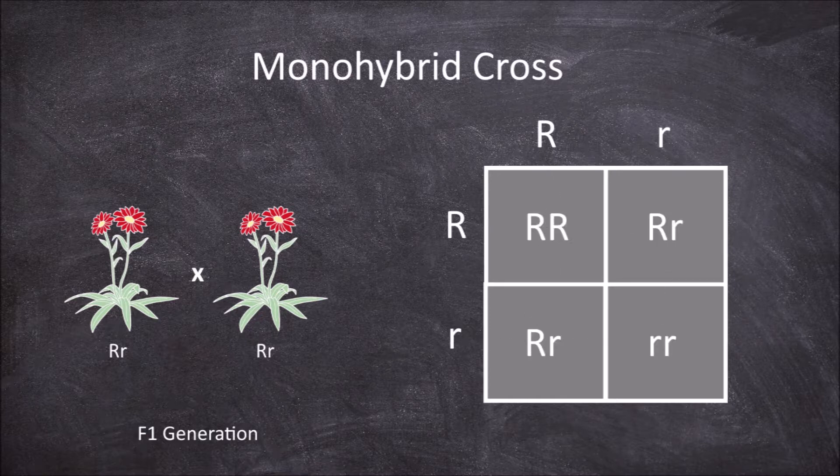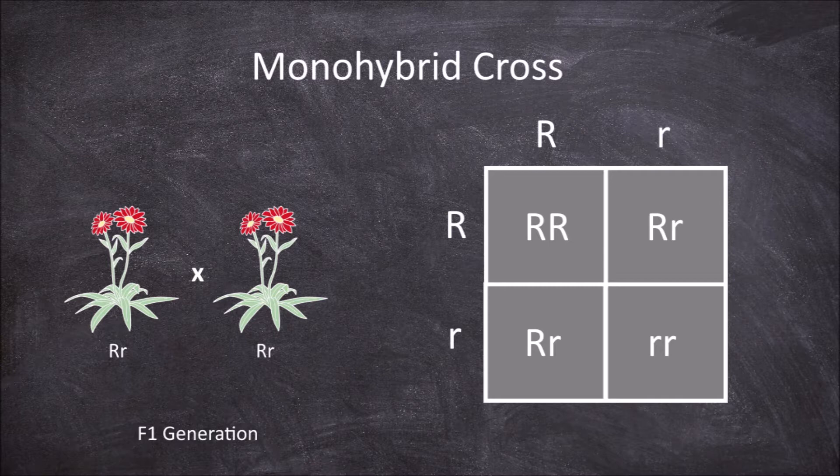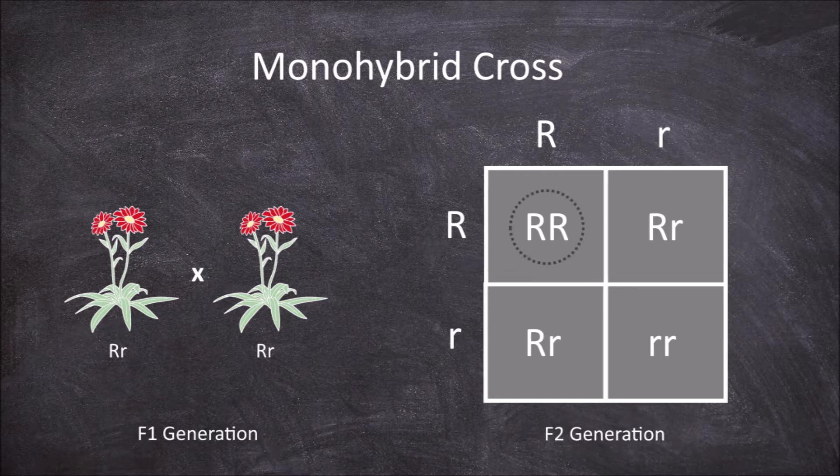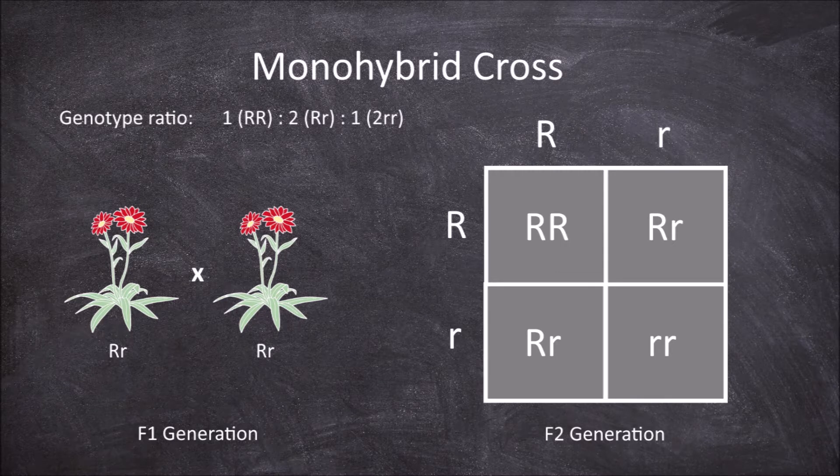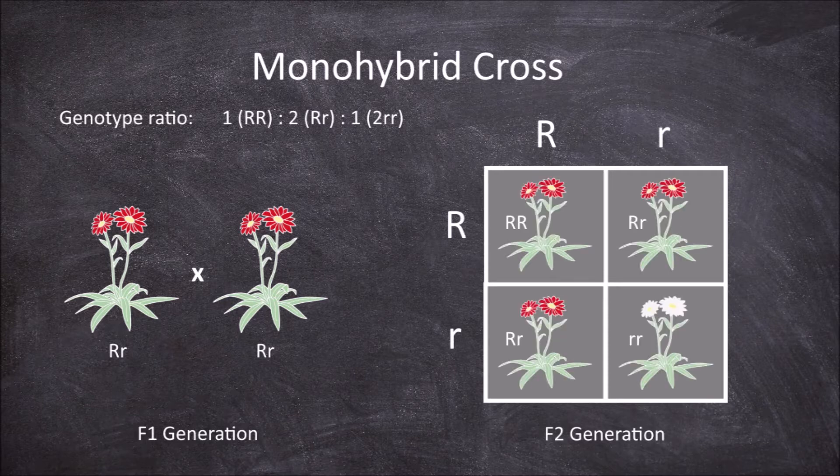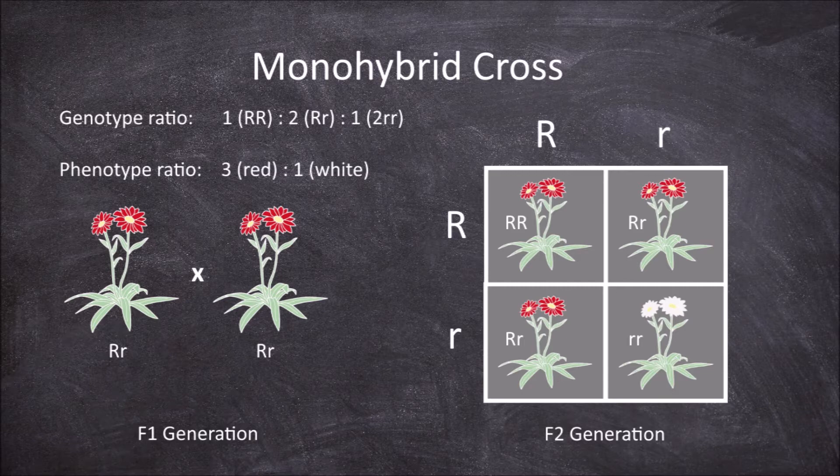These offspring from this second cross would be considered the F2 generation. This time though we get three different genotypes: big R big R, big R little r, and little r little r, with a genotype ratio of 1 to 2 to 1. We also get two different phenotypes: plants with red flowers and plants with white flowers, with a phenotype ratio of 3 to 1.